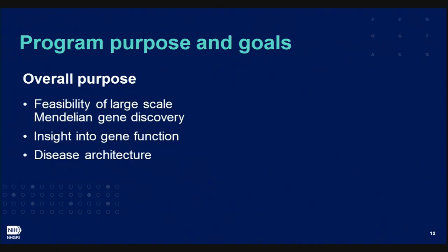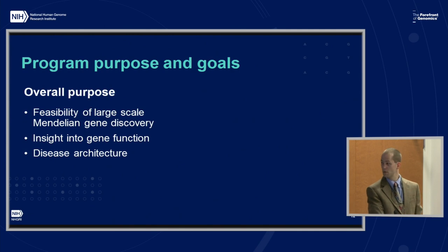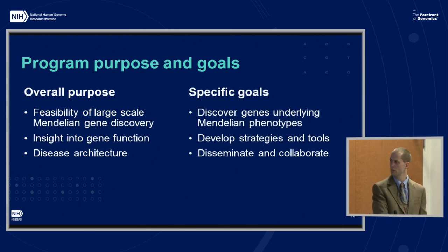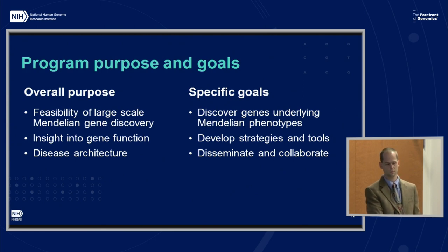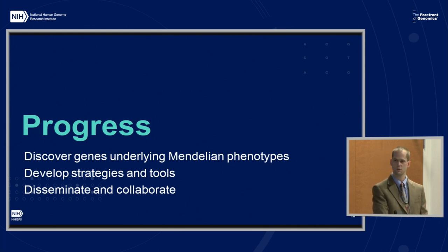Back in 2011, the framework for launching the CMGs — the overall purpose — was to see if it was feasible to do Mendelian gene discovery at large scale, and if so, to use that as a lens for insight into gene function and disease architecture. The specific goals were first to discover genes underlying Mendelian phenotypes as many as possible, to develop strategies and tools for effective discovery, and then to disseminate and collaborate on the findings. I'll briefly walk through progress on each.